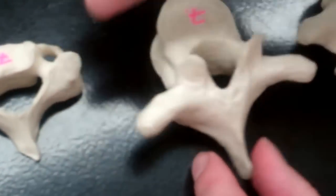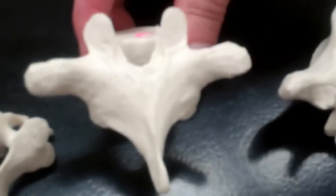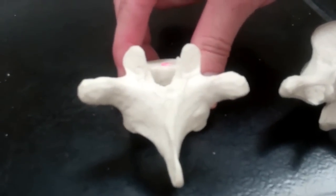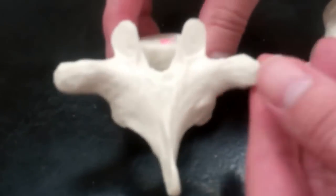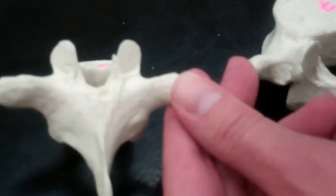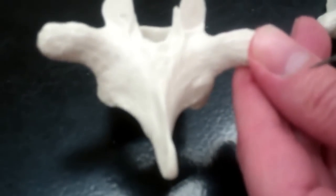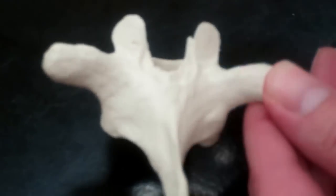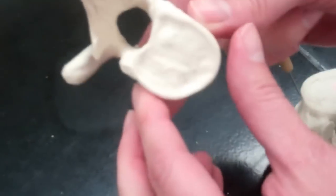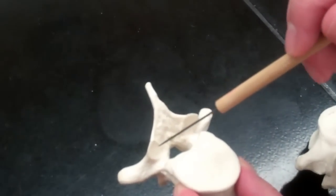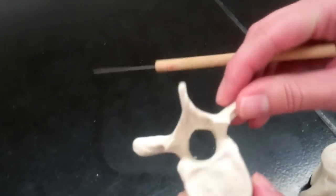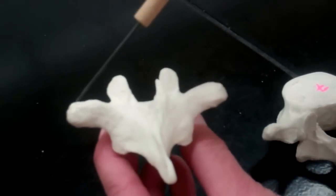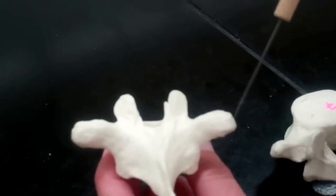As we move to the second one, this is our giraffe. Our giraffe is going to represent the thoracic. We have 12 of these guys. On this one, you can also see some of those other parts really well: the superior articular facets, the inferior articular facets, the spinous process, the transverse process, and the body.